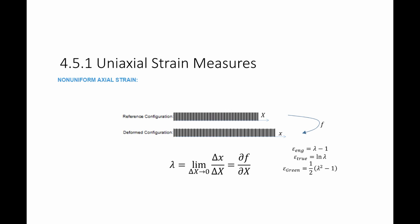In these cases, the strain equations are still the same. Epsilon engineering is equal to lambda minus 1. Epsilon true is equal to the natural logarithm of lambda. Epsilon green is equal to half lambda squared minus 1. But instead of using the global length, we're using a local measure of change of length, which is lambda, or the stretch ratio, which is calculated by the differentiation of f with respect to capital X.